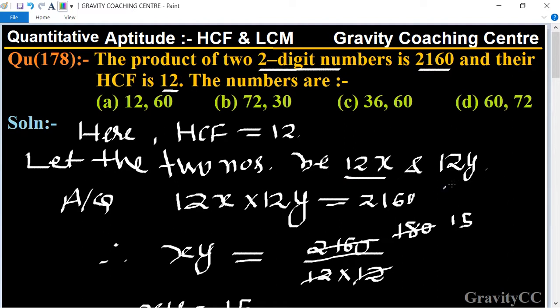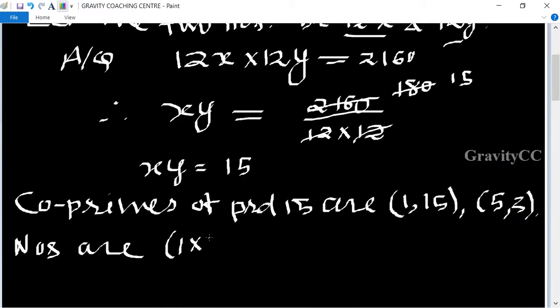The numbers are 12x and 12y. Multiplying, we get 1 into 12 comma 15 into 12.